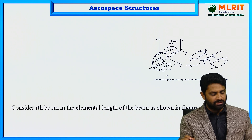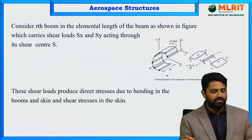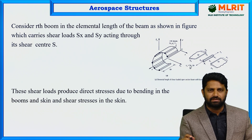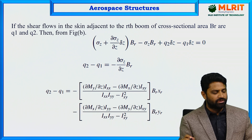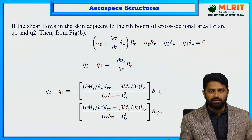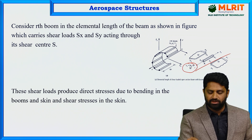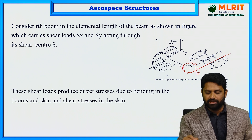Considering the rth boom in the elemental length of the beam as shown in the figure, which carries shear loads S_x and S_y acting through the shear center: these shear loads produce direct stresses due to bending in the booms and the skin, and shear stresses in the skin. If the shear flows in the skin adjacent to the rth boom of cross-sectional area B_r are q1 and q2, we can consider the equilibrium from the diagram.